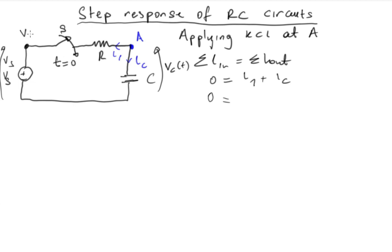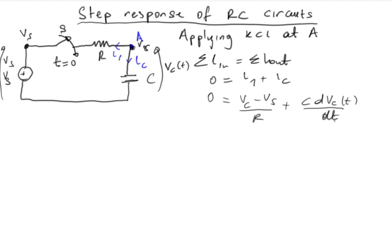Here we have the voltage vc at this point, and VS on the other side. Since the current is moving from vc to VS, we have a drop in that direction, giving us (vc minus VS) over R, plus iC, the current across the capacitor, which is given by C times dvc(t)/dt. We then separate variables and bring like terms together, keeping C dvc(t)/dt on one side.